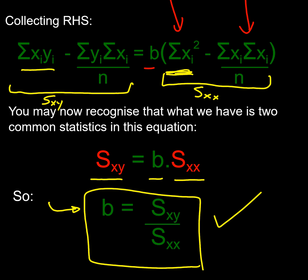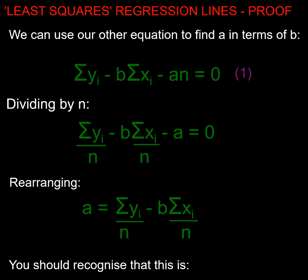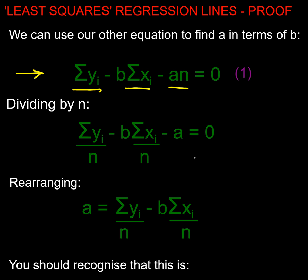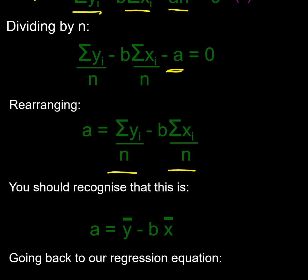Now let's find the constant a. We'll use the first equation we derived: the sum of yi, subtract b times the sum of xi, subtract n times a equals zero. Dividing through by n, I can see the sum of yi over n is the mean y-bar, and the sum of xi over n is the mean x-bar. Rearranging to make a the subject: a equals y-bar minus b times x-bar. That's quite nice and neat.